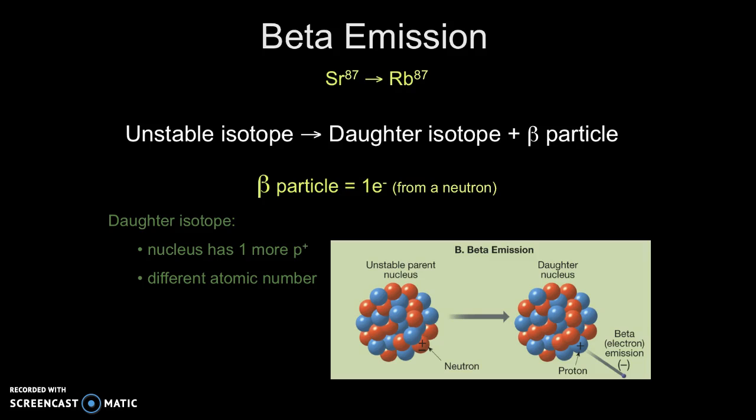Beta emission is the second type of decay process. This occurs when the unstable parent atom ejects a beta particle to become a more stable daughter atom. A beta particle is an electron that came from a neutron within the nucleus. Because electrons have no mass and there is now an additional proton in the nucleus, the daughter atom will have a different atomic number than the unstable parent.